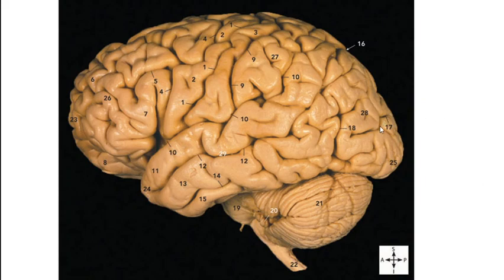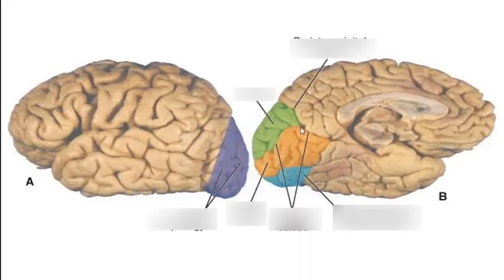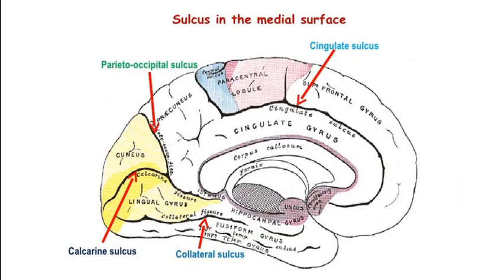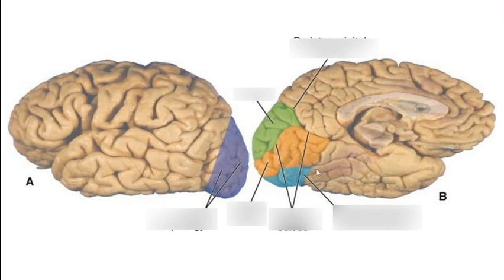The lunate sulcus, if present in a human brain, might look like this — and this is the lateral occipital sulcus. On the medial side of the occipital lobe, you can see the parieto-occipital sulcus, the calcarine fissure, the cuneus between the two, and the lingual gyrus. This region constitutes the medial surface of the occipital lobe, along with the collateral fissure and inferior temporal gyrus.